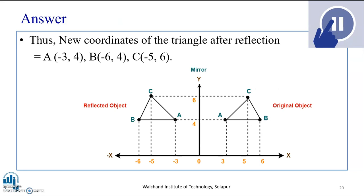Applying the equation for reflection along the y-axis: the original object is A, B, C. Applying the reflection equations to the points, we get A equals (-3, 4) — the y-value remains the same. For point B we get (-6, 4), and for C we get (-5, 6). We can observe that the x-coordinates have become negative, which is what the equation represents. This is the graphical representation showing the original object and the reflected object. When solving a reflection problem, it is essential to understand about which axis the reflection is being applied, and based on that, you get the mirror image.